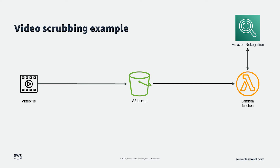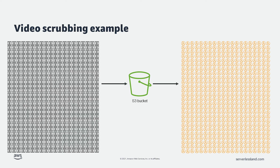The Lambda function then grabs the file and uses Amazon Rekognition to inspect the video for sensitive data. This pattern also scales incredibly well. If I drop 500 video files into the S3 bucket at the same time, each file will invoke a Lambda function to process that individual video file. This allows for large-scale parallel processing without having to code for it.